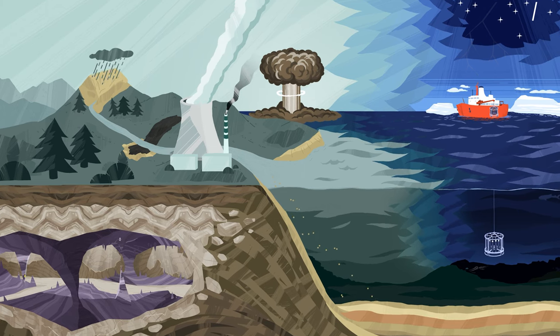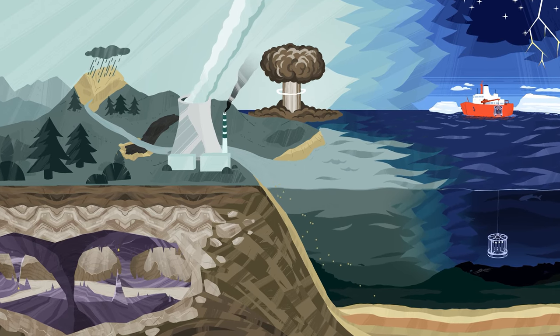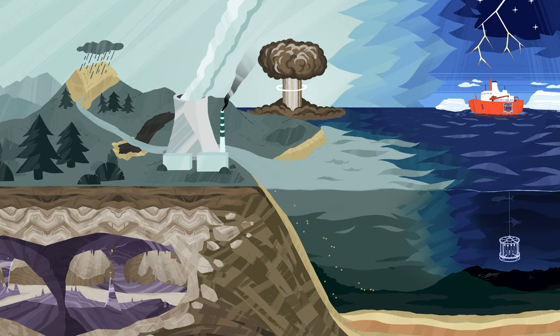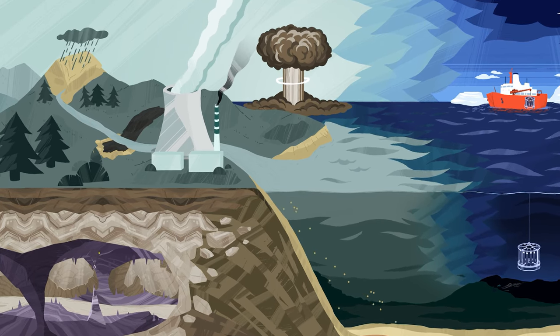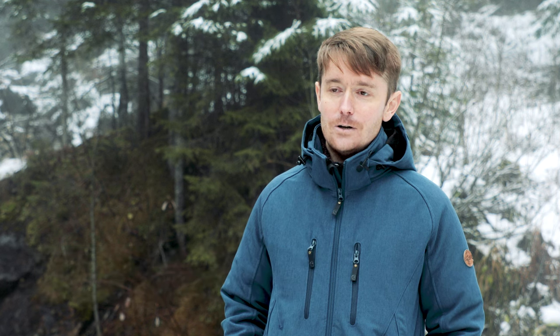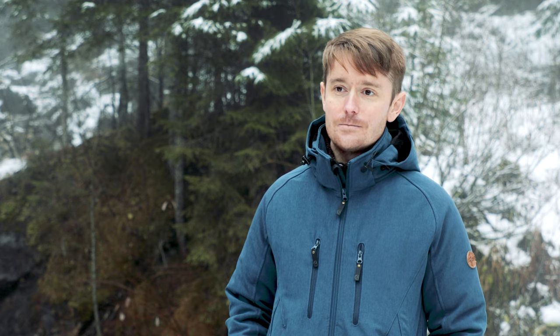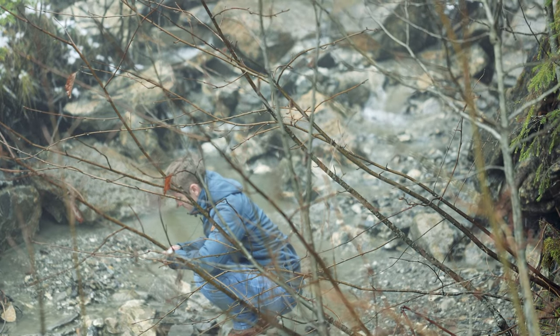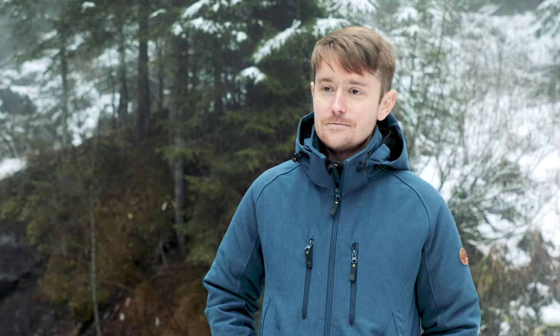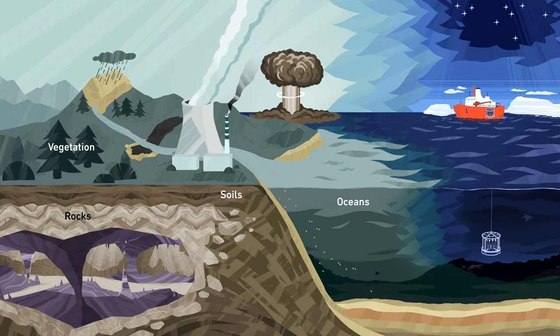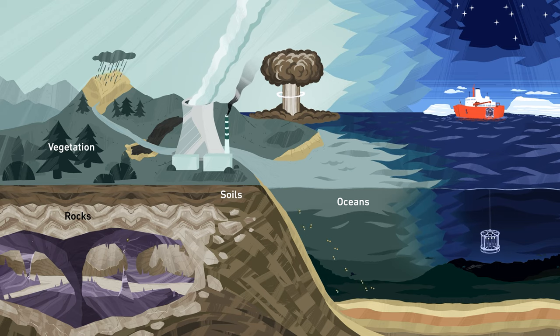Carbon is at the centre of all life on Earth. It is part of the global carbon cycle, a term given to the processes where carbon exchanges between and resides within different reservoirs on Earth. Those reservoirs include the atmosphere, oceans, rocks, vegetation and soils.